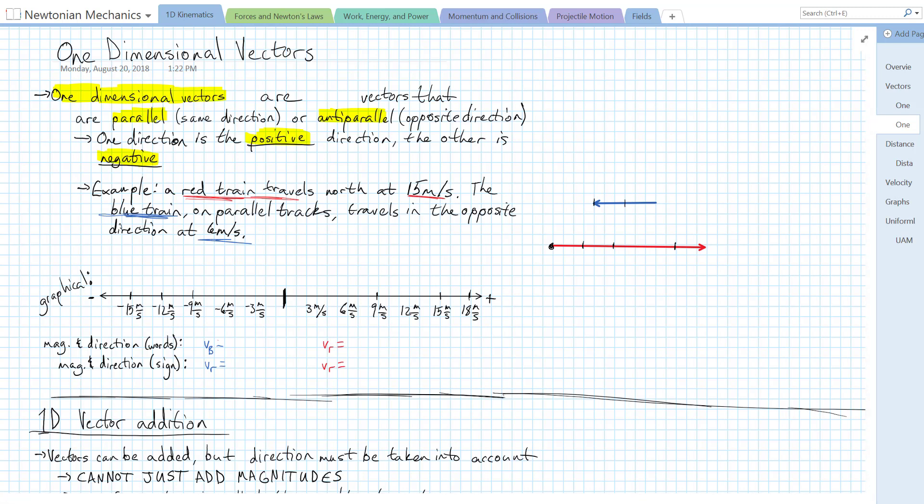So down below, I'm going to write out the magnitude and direction of these vectors with words and with positive and negative signs. And we can choose one or the other, either words to represent direction, or plus and minus if we're working in one dimension.